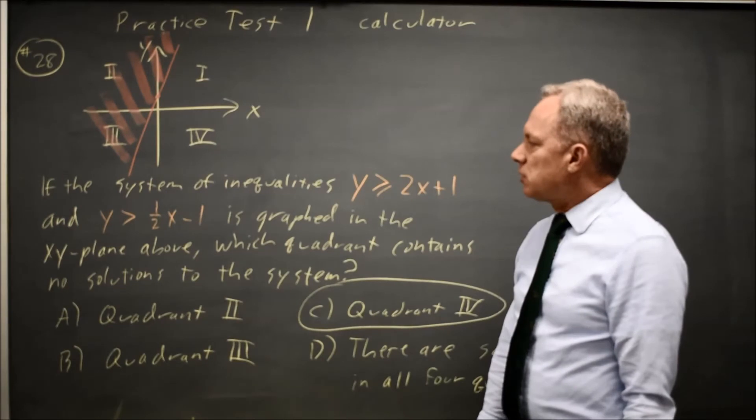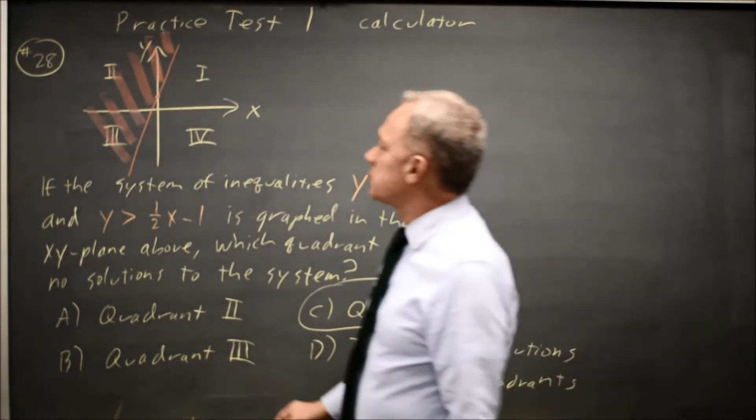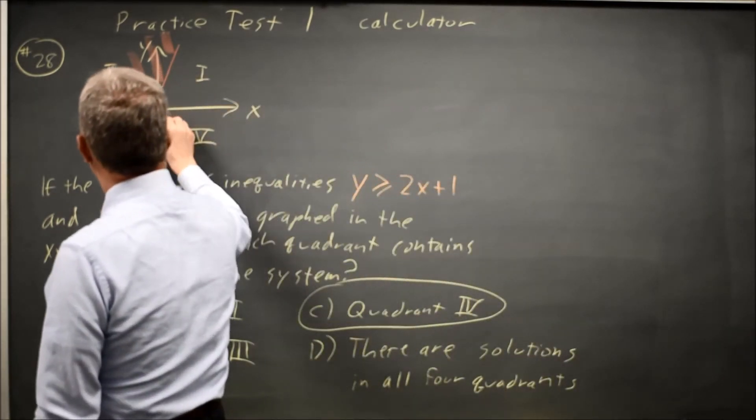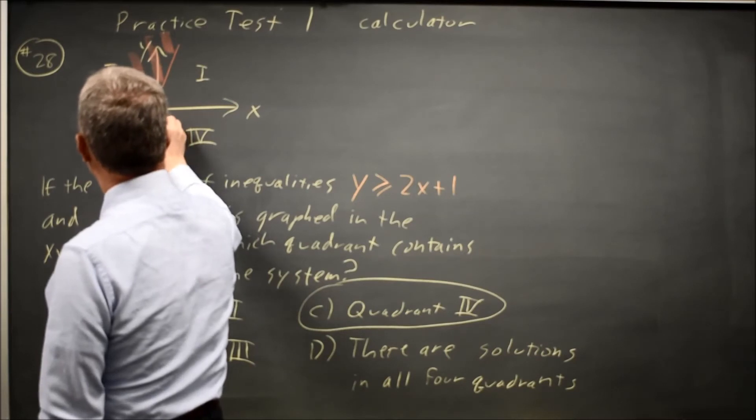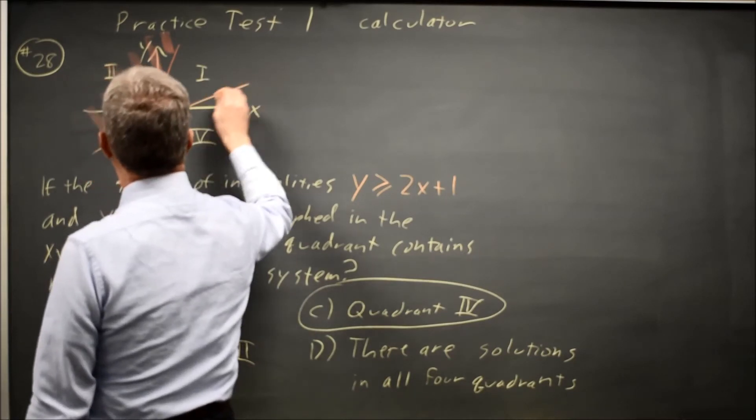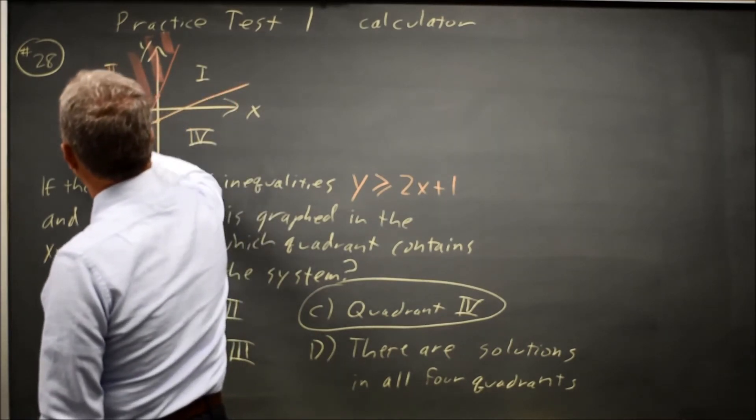But let's graph the rest of it. Y greater than 1 half x minus 1, that is an intercept of negative 1 and a slope of positive 1 half, which looks something like this. And I want above there.